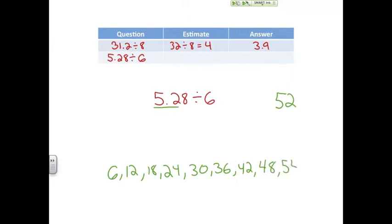So we can see that 52 is halfway in between 48 and 54. Since we have an 8 in the place value before it, I am going to choose to estimate this one to 54.